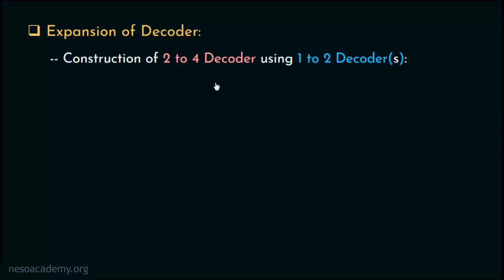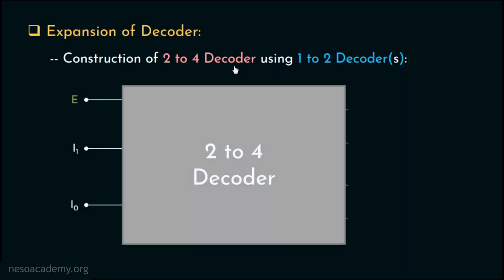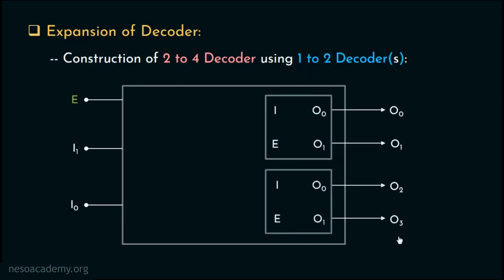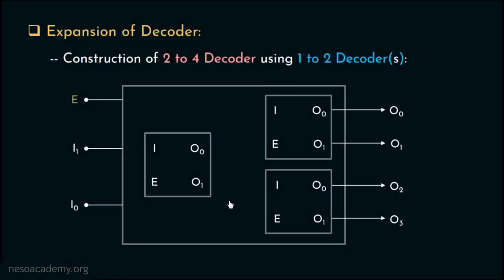Now let's move on to the construction of the 2-to-4 decoder. In a 2-to-4 decoder, there will be three input lines including the enable line and four output lines. There are four output lines and we are constructing this using 1-to-2 decoders, so we will need two different 1-to-2 decoders to cover these four output lines. To control these two, we will need another 1-to-2 decoder. Based on what is being fed through the enable line, we can determine the input sequence for the desired output line. So we feed O0 of this decoder to one enable line and O1 to the other enable line.